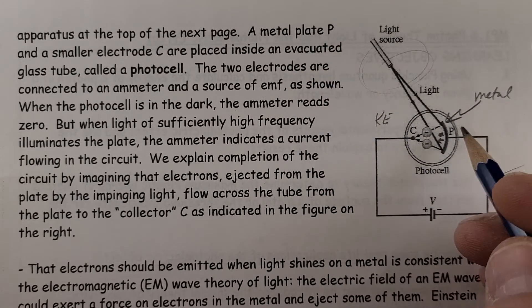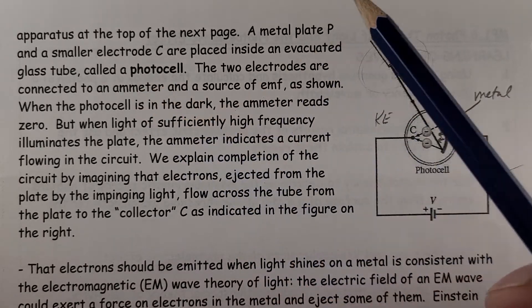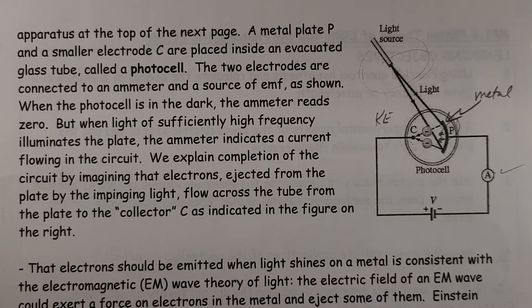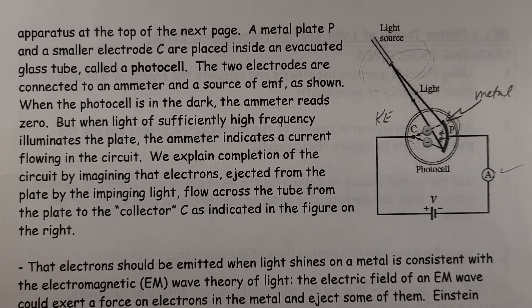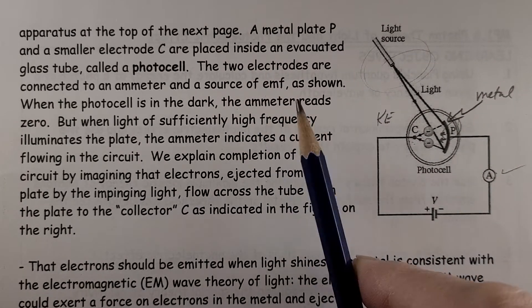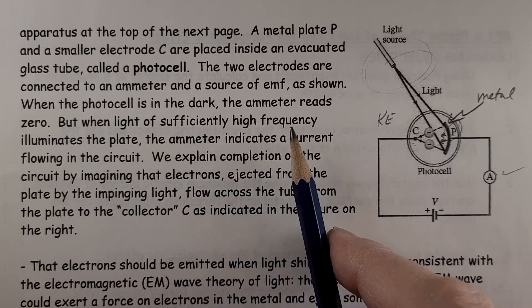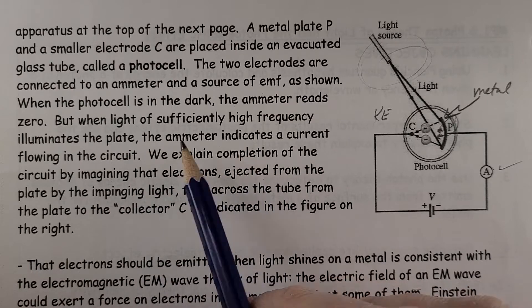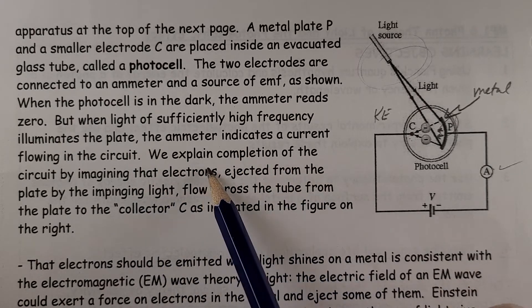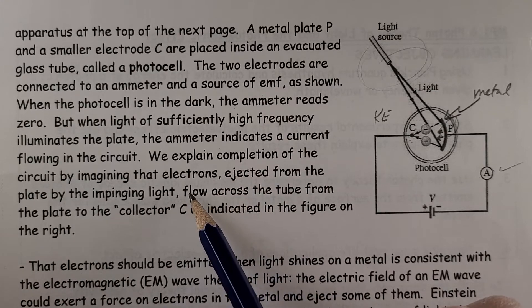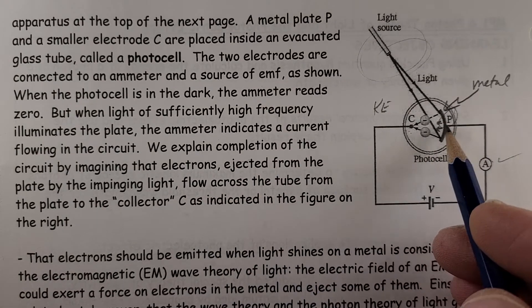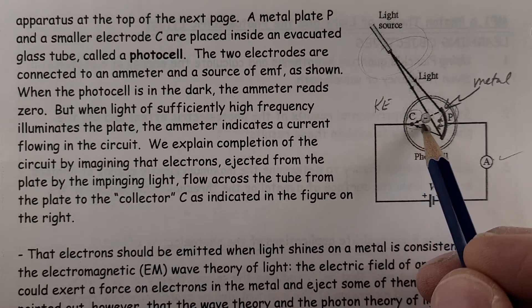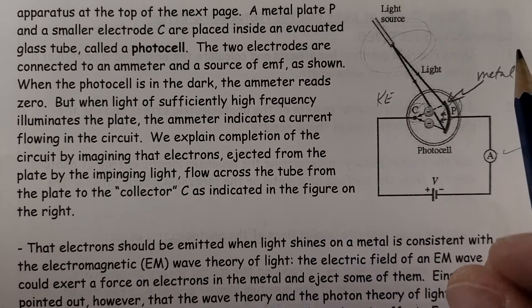So metal plate P, as you see here, and a small electrode C are placed inside an evacuated glass tube called a photocell. The two electrodes are shown connected to an ammeter, and a source EMF, or a battery or voltage source, is shown when the photocell is in the dark. The ammeter reads zero because there's an open circuit here. But when light of sufficiently high frequency illuminates the plate, the ammeter indicates a current flowing through the circuit. We explain completion of the circuit by imagining that the electrons ejected from the plate by the impinging light flow across the tube from the plate to the collector right here, as indicated over here in the diagram.